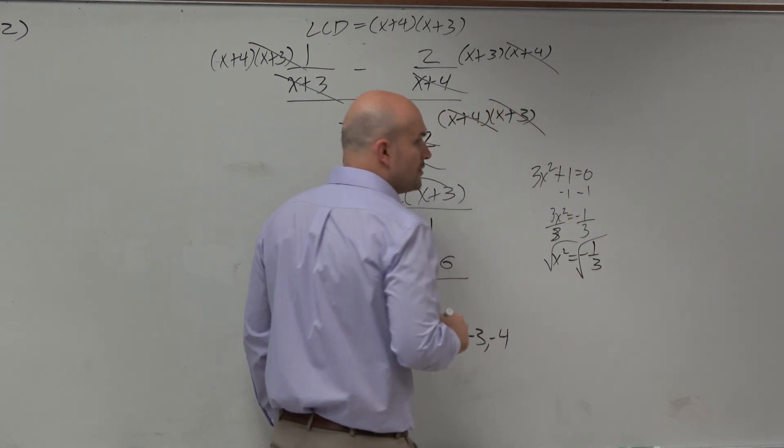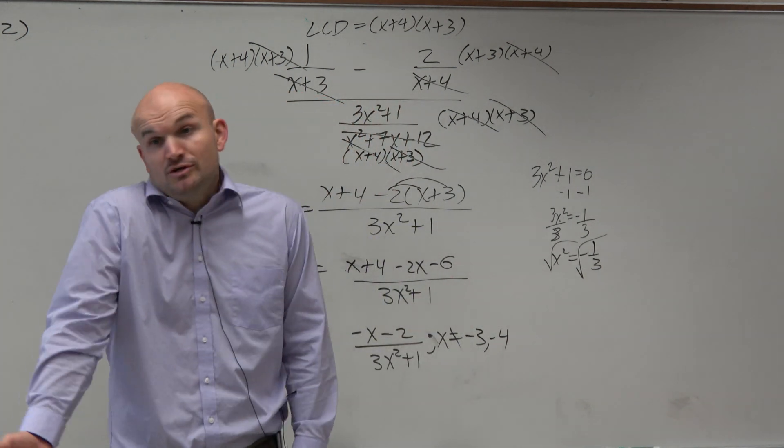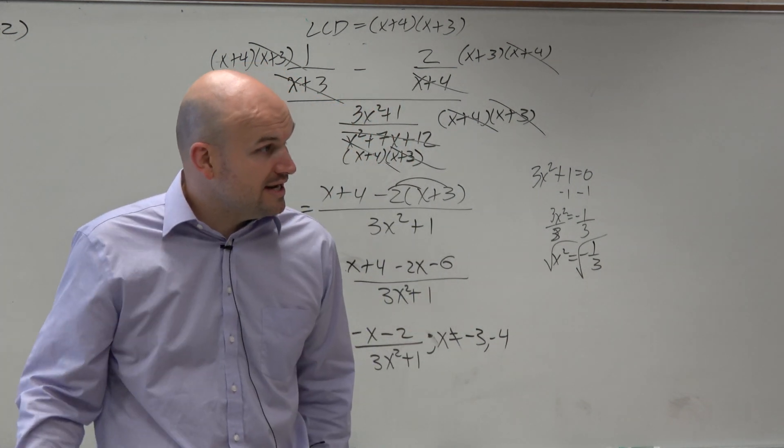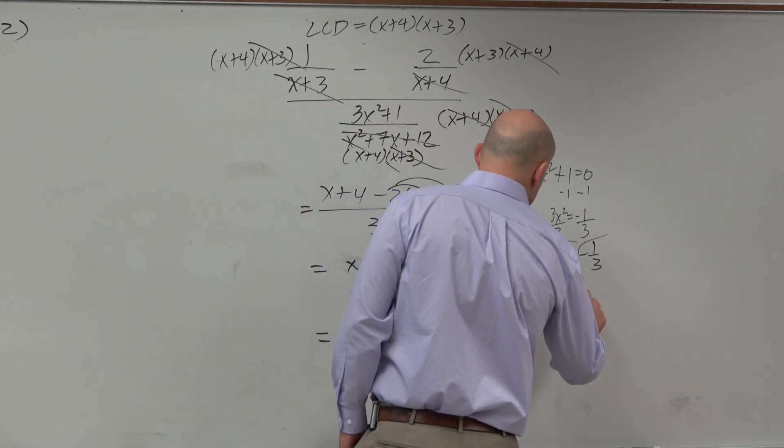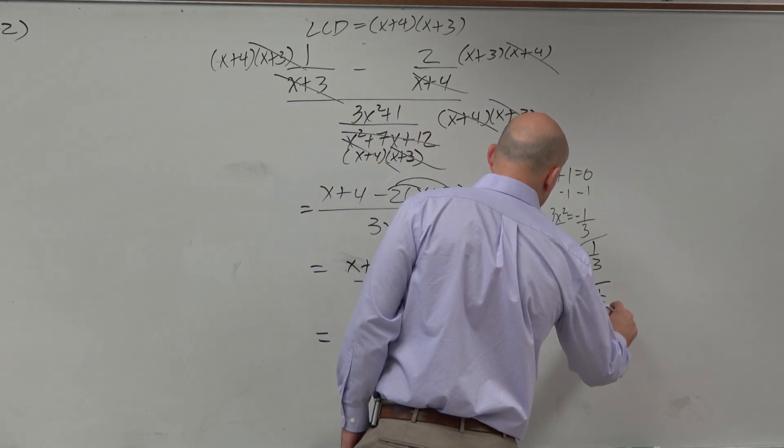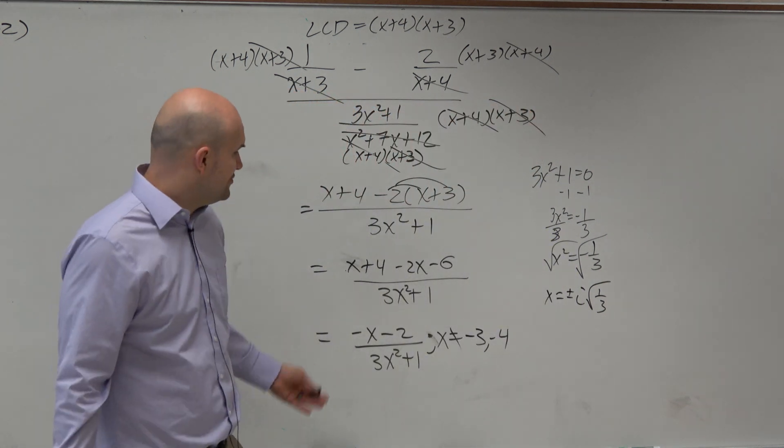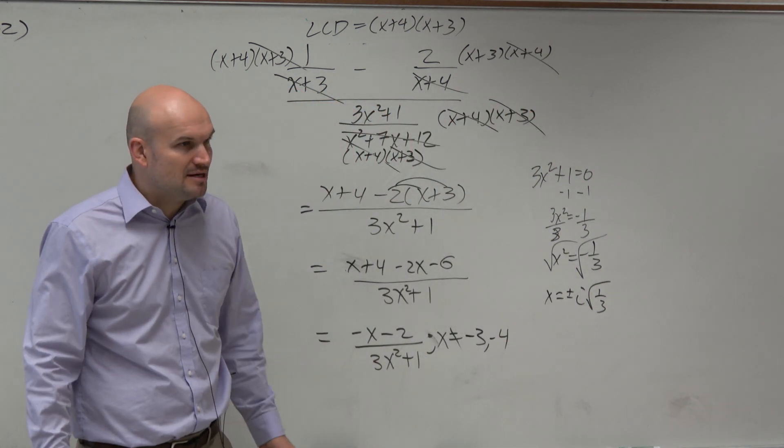Well, what happens when you try to take the square root of a negative 1 third? You can't use the real number system anymore, right? You have to use the complex number system. Therefore, you're going to have x equals plus or minus i square root of 1 third. Well guys, do we need to exclude our complex numbers?